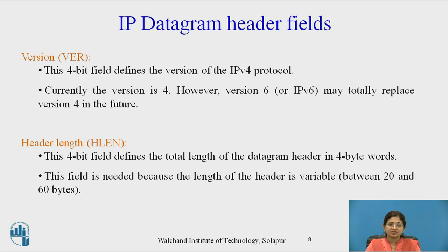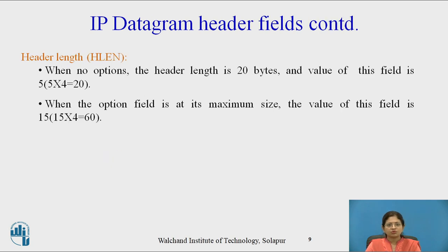The next field is header length. This 4-bit field defines the total length of the datagram header in 4-byte words. This field is needed because the length of the header is variable, between 20 to 60 bytes. When there is no option field, the header length is only 20 bytes and the value of this field is 5 (5 × 4 = 20 bytes). When the option field is at its maximum size, the value of this field is 15 (15 × 4 = 60 bytes).